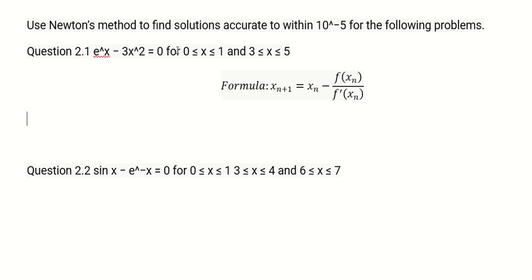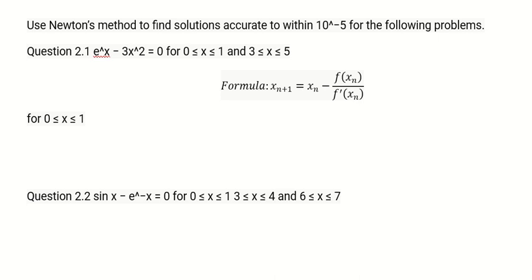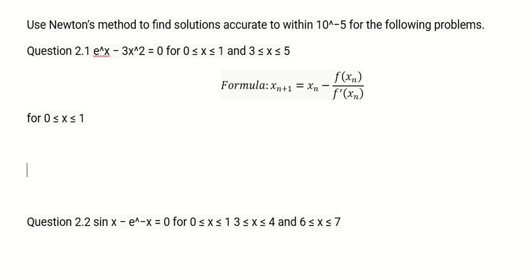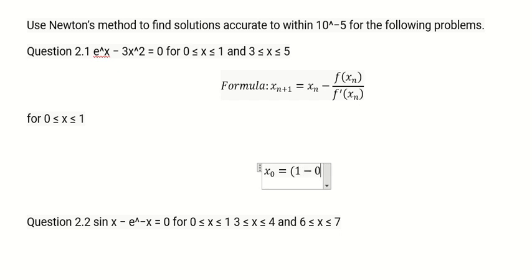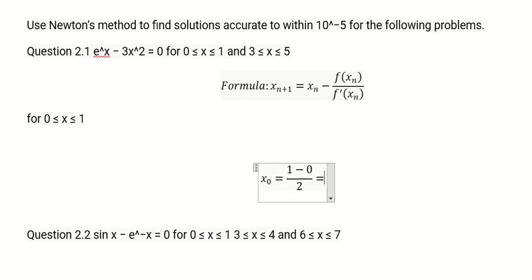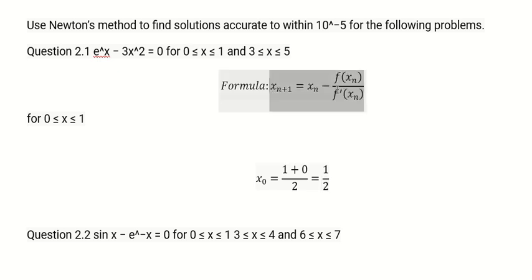For the first problem, I select the middle value as x₀. We put one minus zero over two, which gives about one-half. So I select the middle value between zero and one, which is one-half.